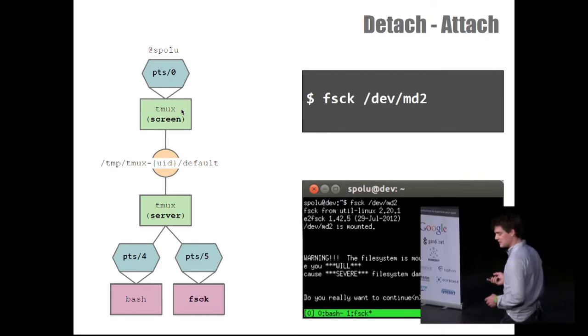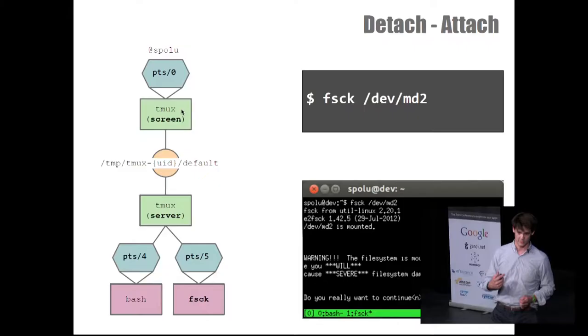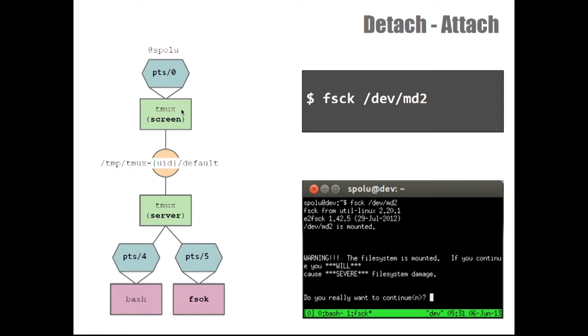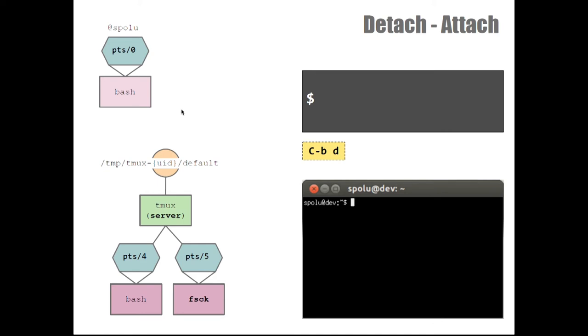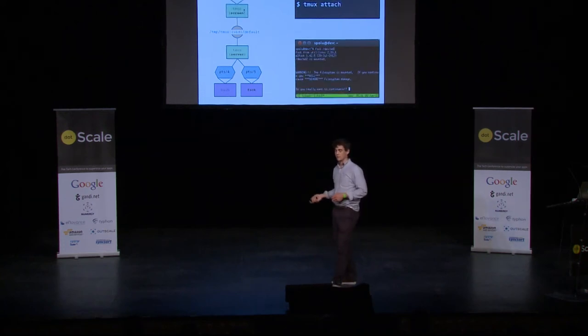One nice feature of Tmux is the ability to detach from a session. Let's say you're on a server and you want to run a long-running process. You can just run it into Tmux and then type Control-B-D. It's going to detach you from your existing session, which means that your client is going to be killed and you end up in your original bash and the server keeps running. Whenever you want to reattach to your server, you can do it from another computer, or the next day you just run Tmux attach and you're back into your session like nothing happened.